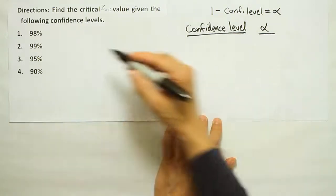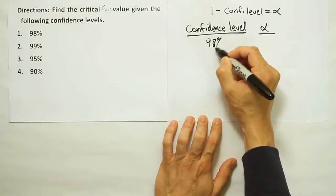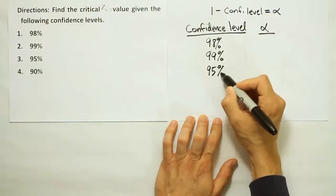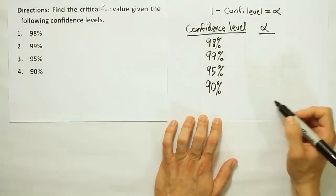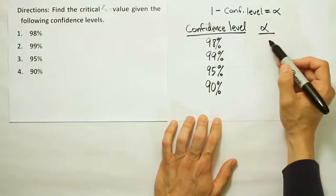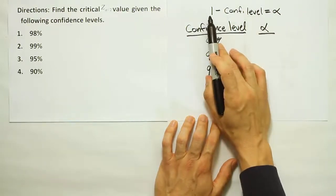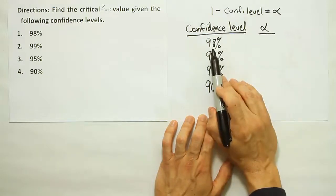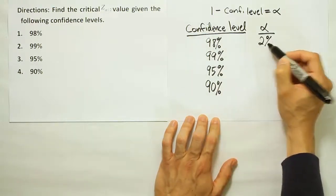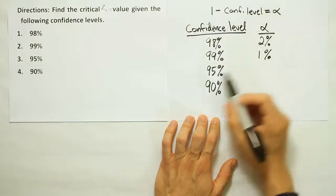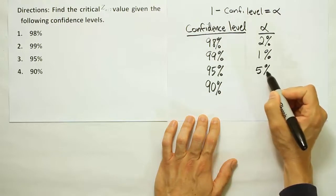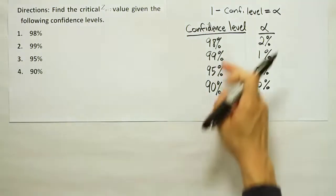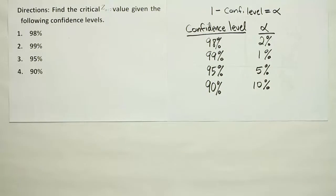So we could set up a little table here to figure out alpha. The confidence level is given, right? We have 98% for the first example, 99% for the second example, 95% for the third, and for the fourth, we have 90%. Okay, so we know these values. Alpha, then, is just going to be, based on this formula, 1 as a percentage is 100%. So if we take 100% and we subtract off the confidence level, we get alpha. 100% minus 98 is 2%. 100% minus 99 is 1%. 100% minus 95 is 5%. 100 minus 90 is 10%. So what we had to do is figure out what our alpha was, given this confidence level. That's easy. We just subtract from 100 and we easily get alpha.